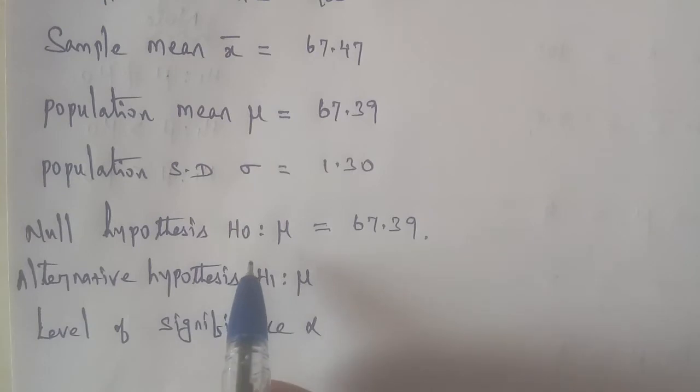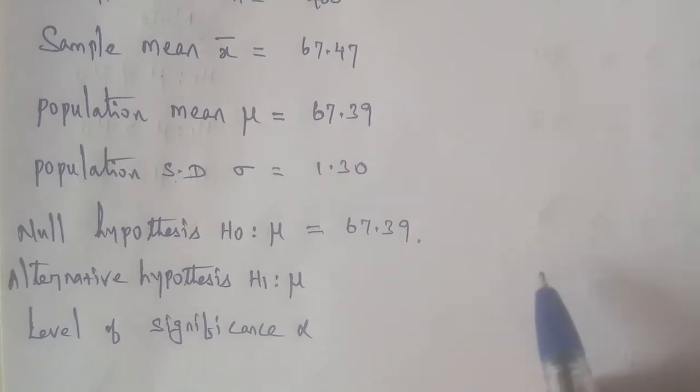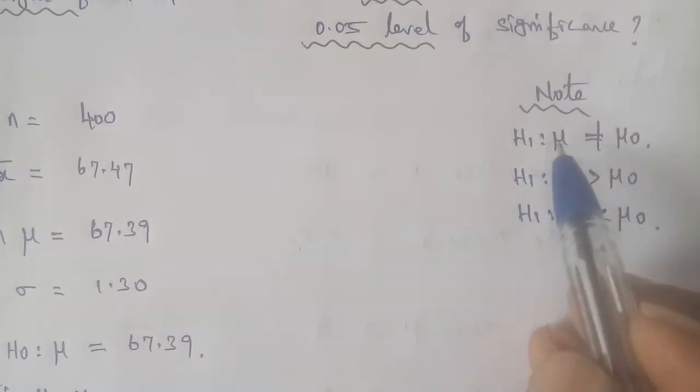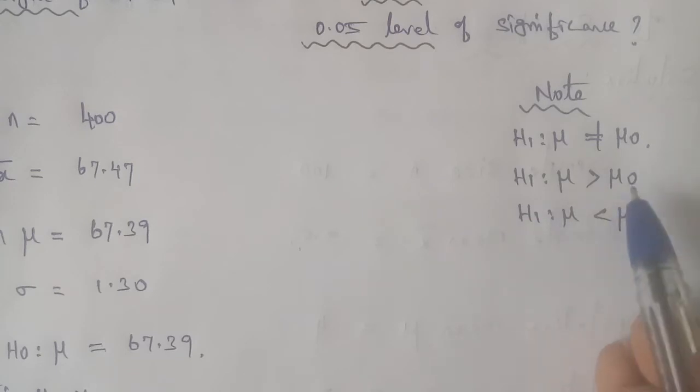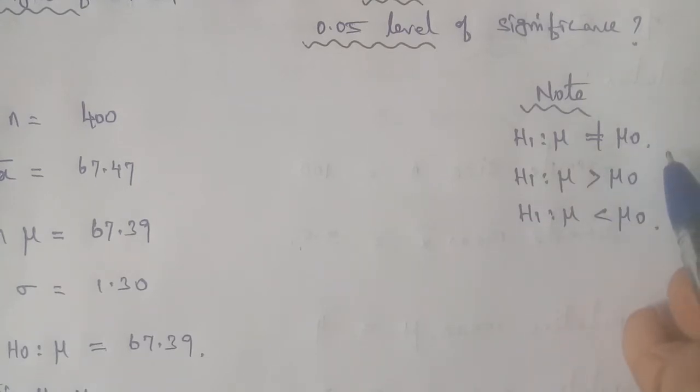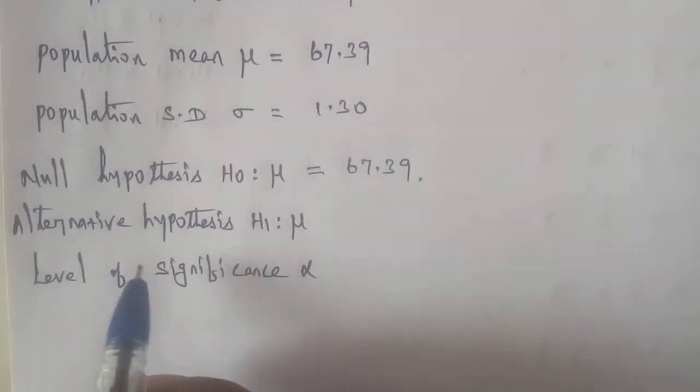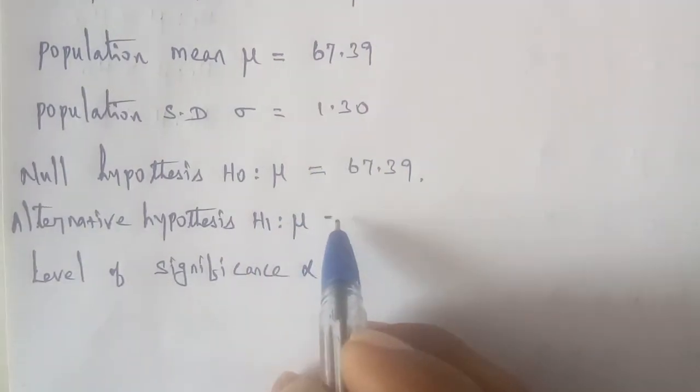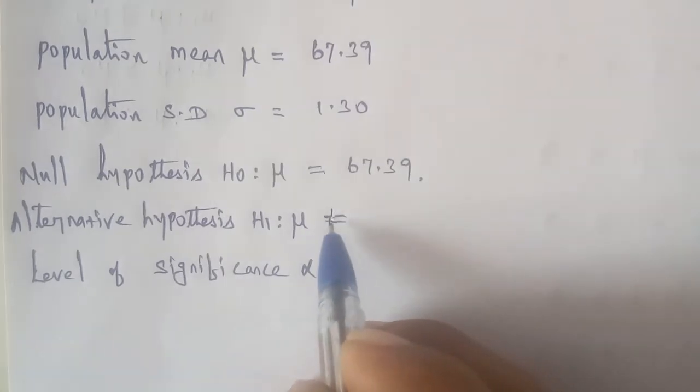Alternative hypothesis. The alternative hypothesis can have three forms: μ not equal to, μ less than, or μ greater than. In this case, it's not equal to 67.39.